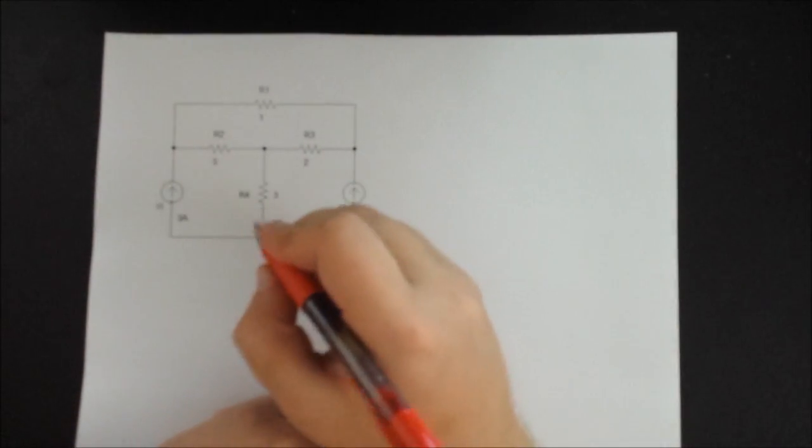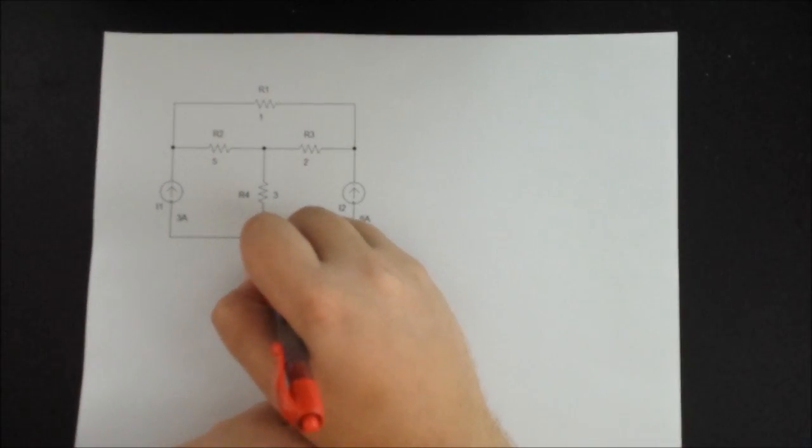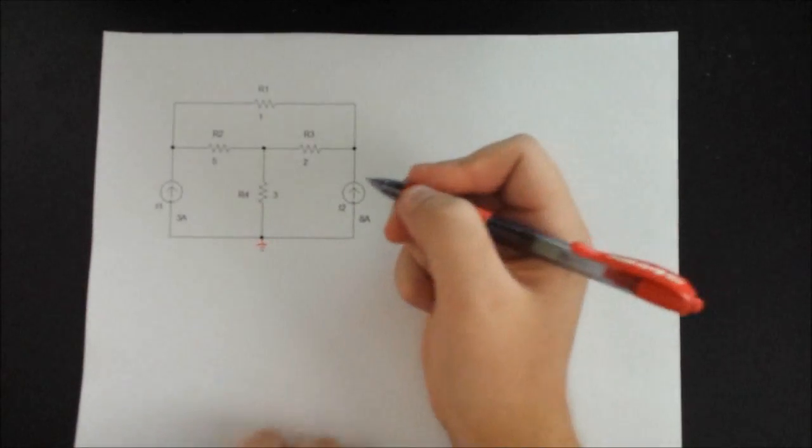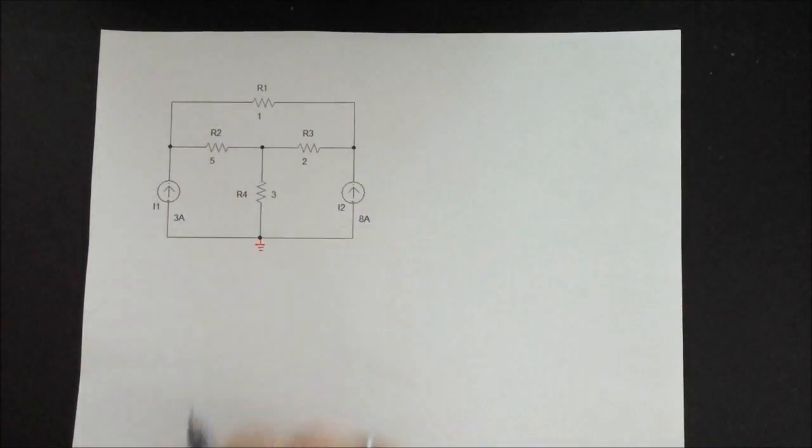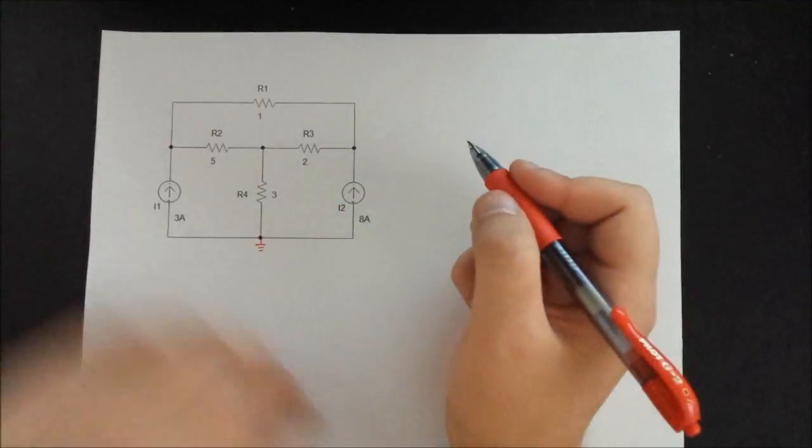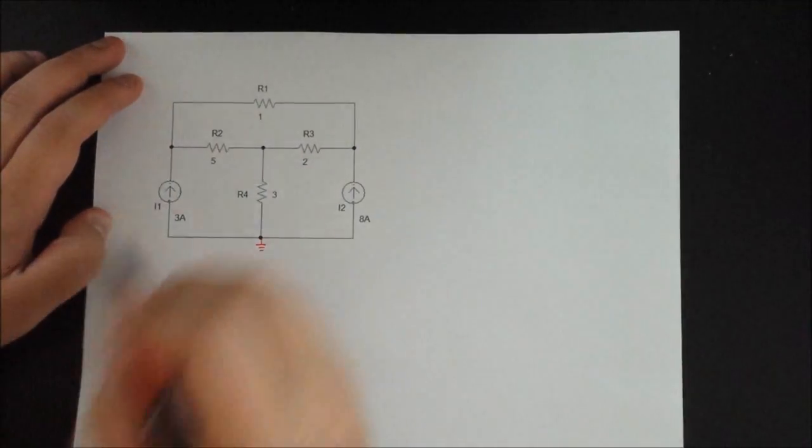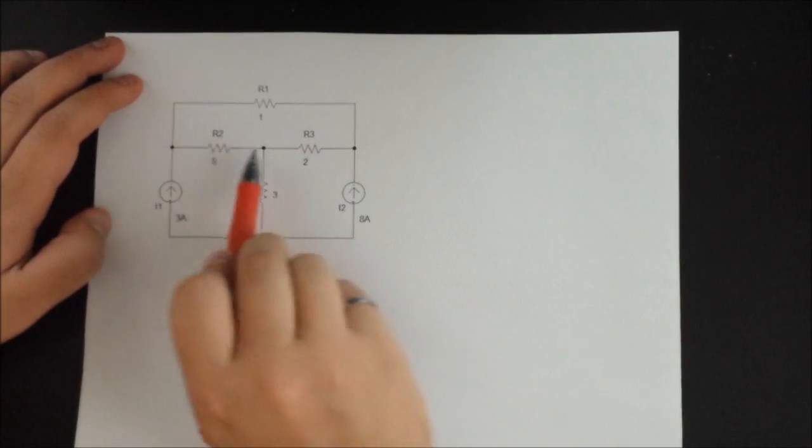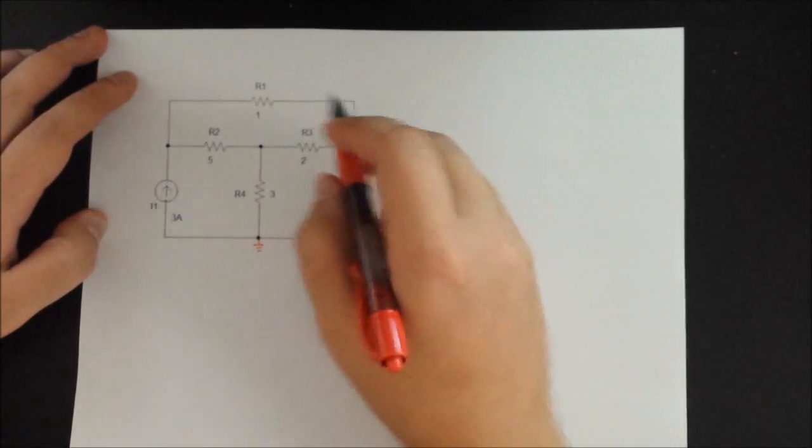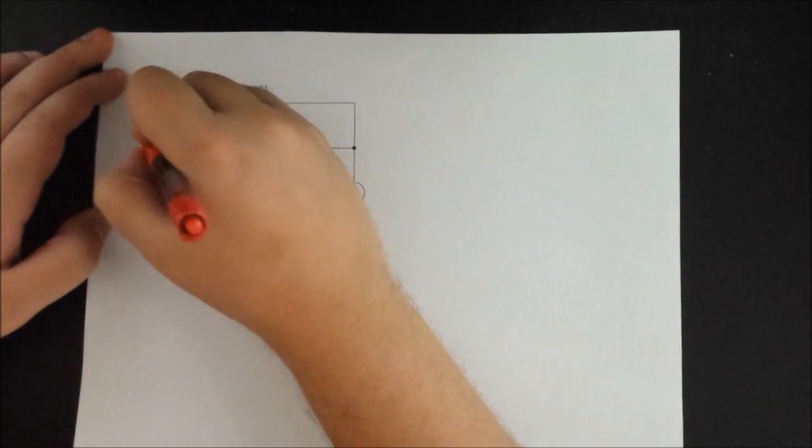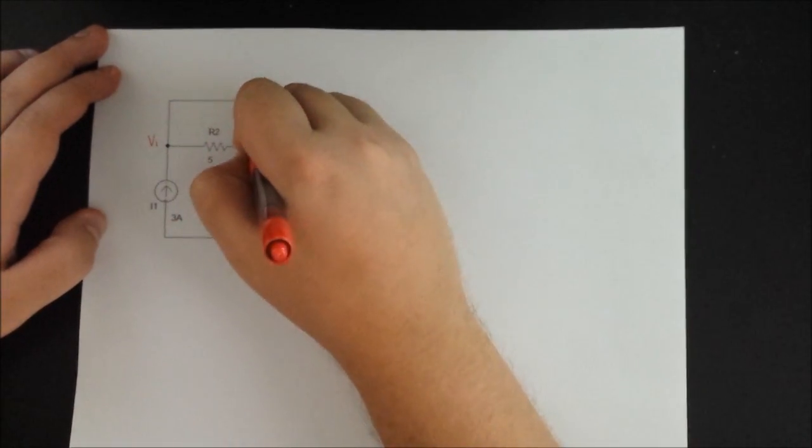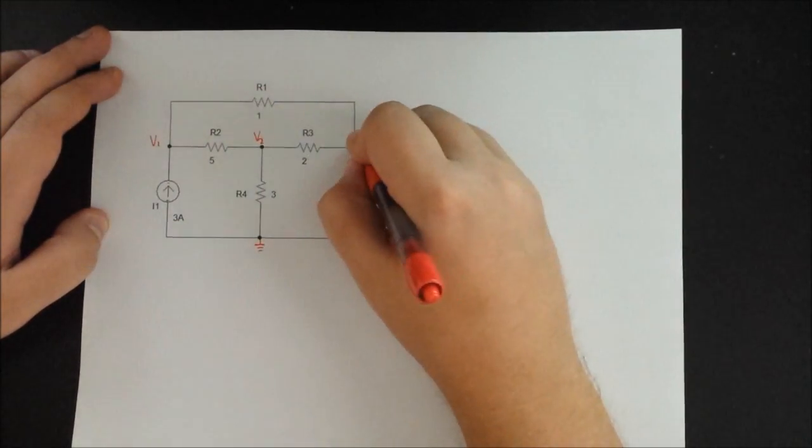The first thing I like to do is set the ground and in this case it's fairly simple. You can just put it at the bottom but you don't have to, you can put it at any node as you wish. The second thing I like to do is name my nodes. So as you can see the software already placed the dots so I don't need to do a lot of identification of the nodes. So I can just go right ahead and put V1, V2 and V3.